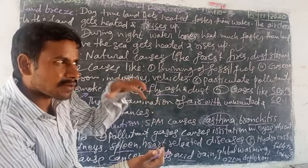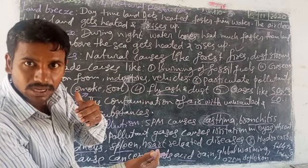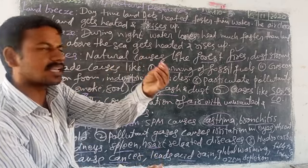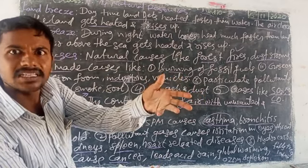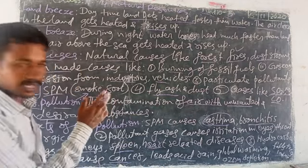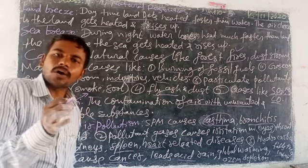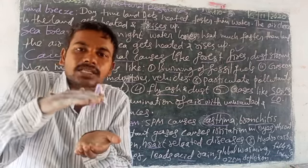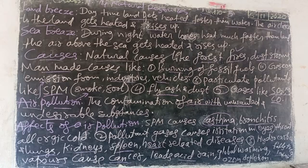Air pollution also leads to global warming. It causes leaves and fruits to fall from plants and trees prematurely — even unripe fruits fall due to air pollution. Next is ozone depletion — the decreasing size of the ozone layer is also caused by air pollution.